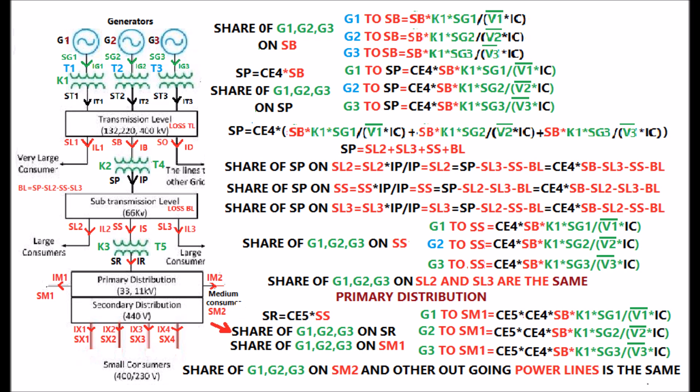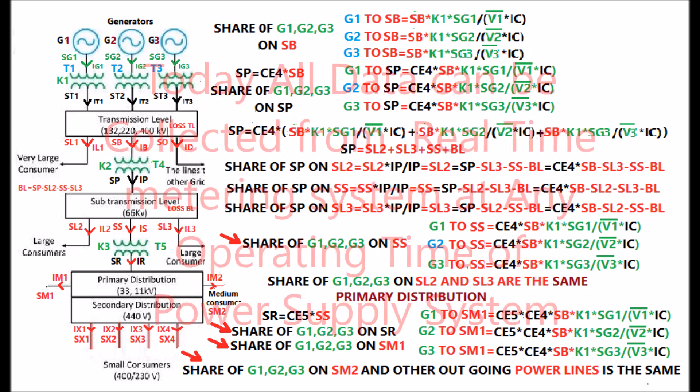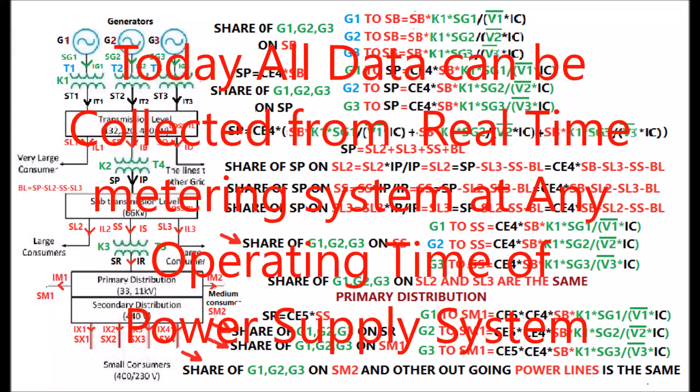The share of G1, G2, and G3 on SL3 can be calculated by multiplying the complex power efficiency CE5, as shown in the display. This is also the same for the share of G1, G2, G3 on SL1 — complex power to the medium consumer. Further, the share of G1, G2, G3 on the power to the medium consumer SM2 and other outgoing power lines is the same.